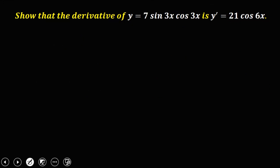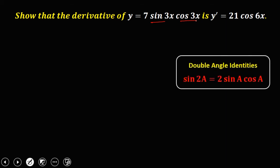For the next given: show that the derivative of y equals 7 sine 3x cosine 3x is 21 cosine 6x. When multiplying sine and cosine, we use the double angle identities. First, we need to rewrite this equation in the required form by multiplying 2 to sine and cosine.